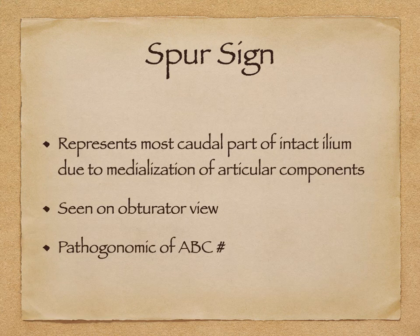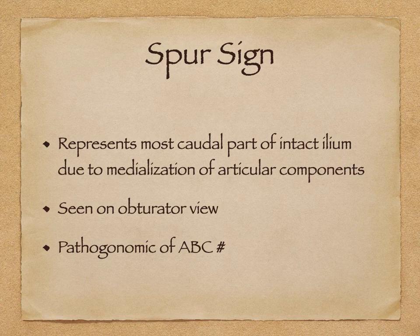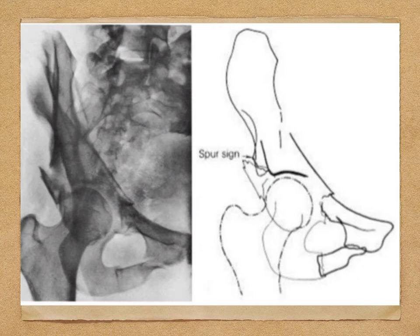The next important sign is the spur sign, which represents the most caudal part of the intact ilium due to medialization of the acetabular component. It is seen on the obturator view, in contrast to the iliac view where the gull sign is seen, and it is pathognomonic of associated both column fracture. You can clearly see the classical spur sign in the associated both column fracture.